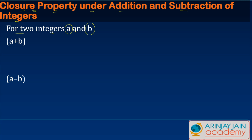the closure property under addition means that when I add these two integers a and b, if a plus b is also an integer, we say that the integers are closed under addition.